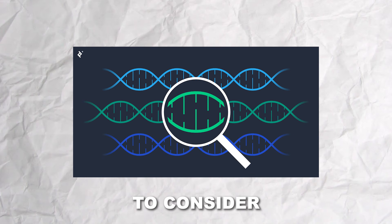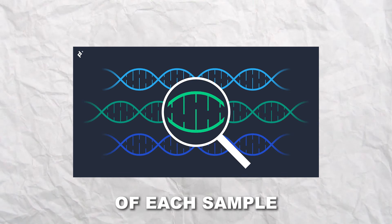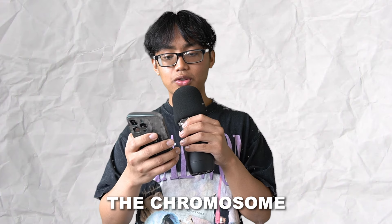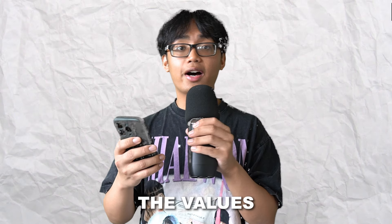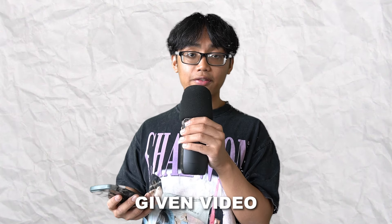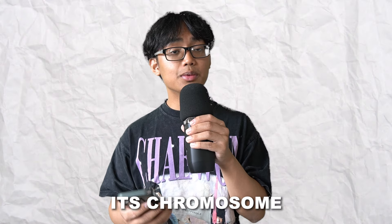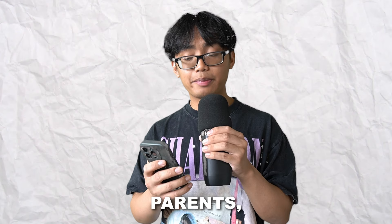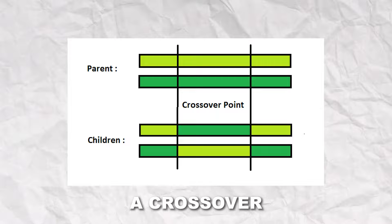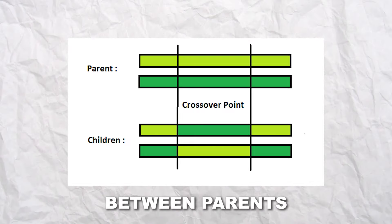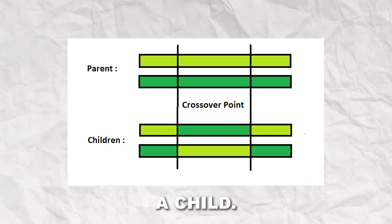From there, we need to consider the chromosome of each video. The chromosome outlines the values for each variable we're considering — for a given video, its chromosome tells us what its volume is, how long the video is, and so on. Then when we breed these parents, we perform a crossover where we essentially swap values between parents when creating a child.